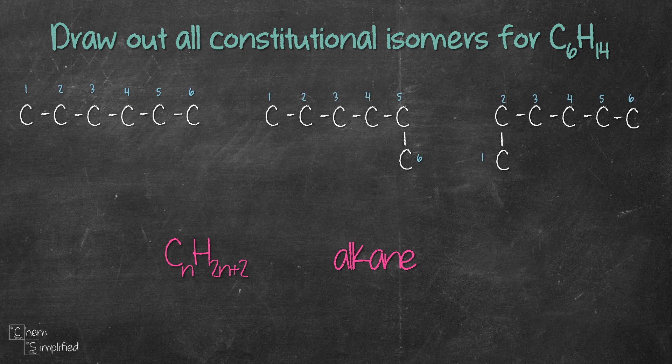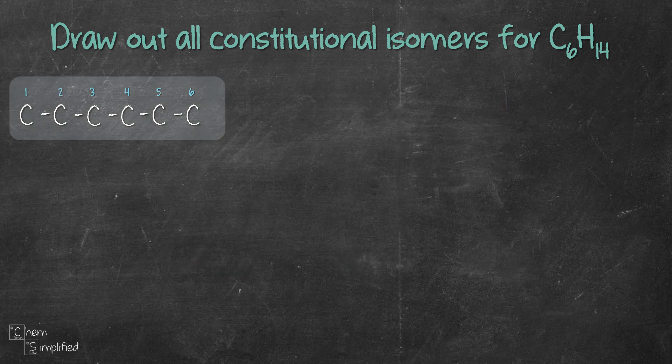Well let's count. Looks like we have 6 carbons straight in a row in all 3 of the structures, so that means they're all the same. So to avoid confusion, I'll just keep the structure with 6 carbons straight in a row like that.